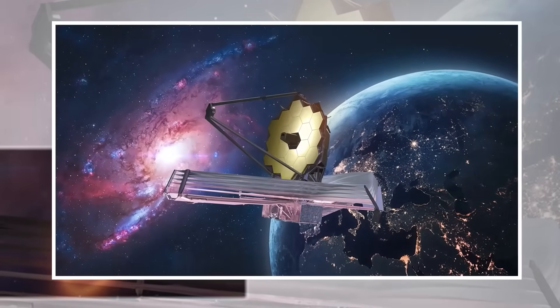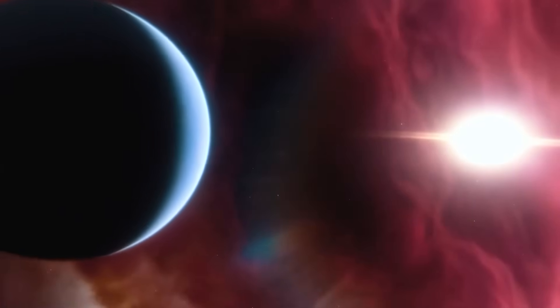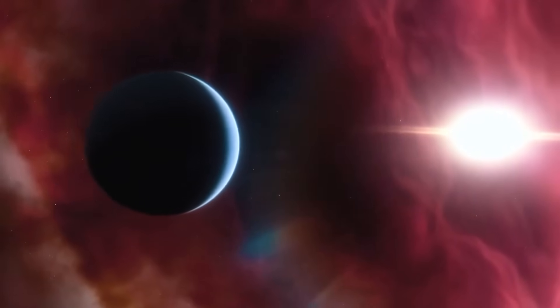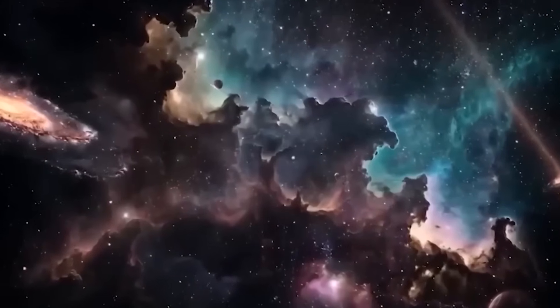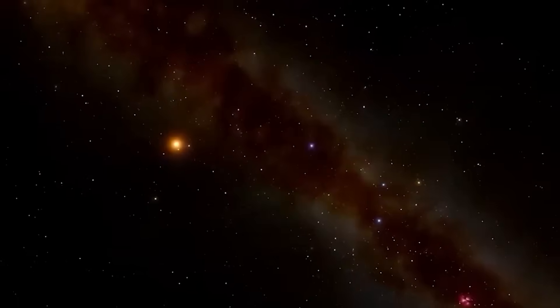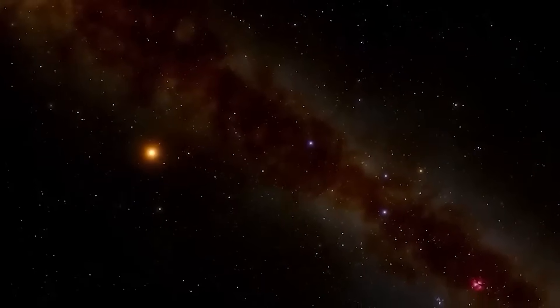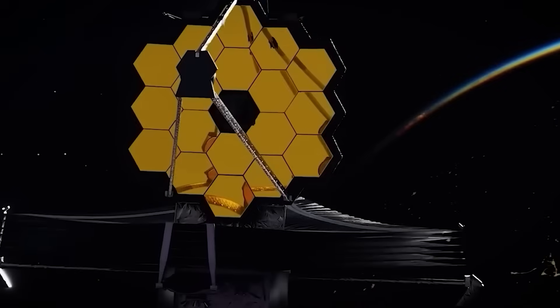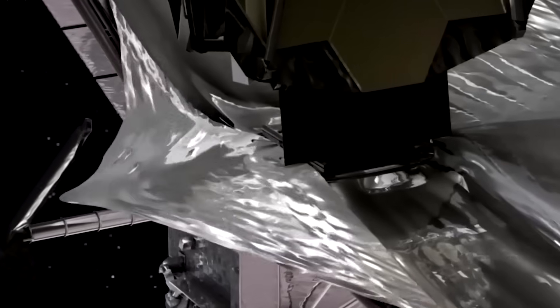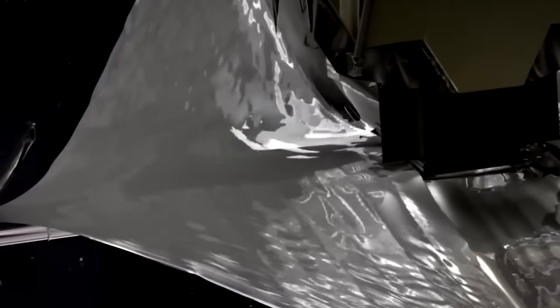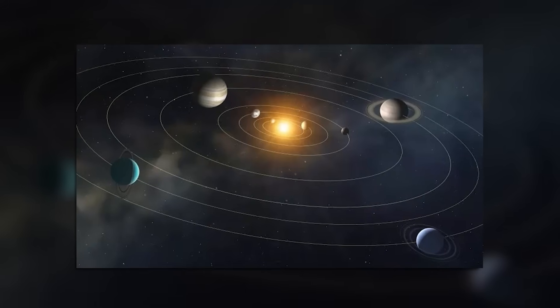At about 100 Earth masses, Saturn's mass, this is the lightest planet ever directly imaged. All previous images were of heavier giants. That matters because it proves we can now see smaller, more realistic planets. If Webb can do this with Saturn-scale worlds, next we might detect Neptune mass or even Earth mass planets in similar systems.